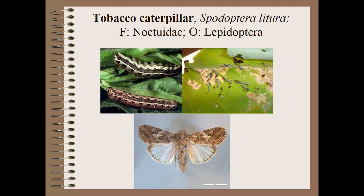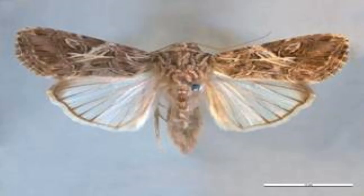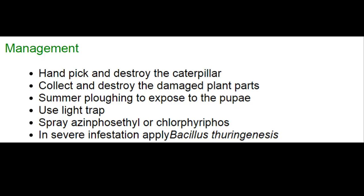Next is the tobacco caterpillar, Spodoptera litura, family Noctuidae, order Lepidoptera. Young larvae feed by scraping leaves from the ventral surface, and later feed voraciously at night on foliage. Larvae are pale greenish or brown with dark markings. Adults have yellowish forewings with purplish spots in the sub-marginal area and wavy white markings. For management: hand pick and destroy larvae; use summer ploughing and light traps; spray chlorpyrifos; or release Bacillus thuringiensis. Also release egg parasitoids such as Telenomus spodopterae and Telenomus remus.